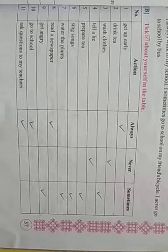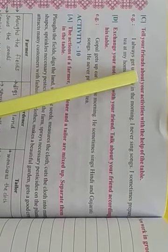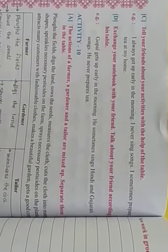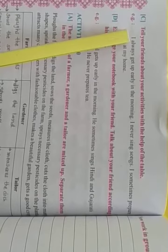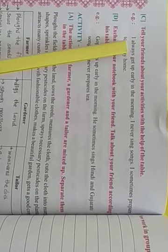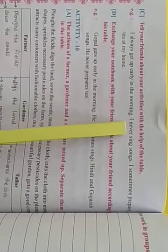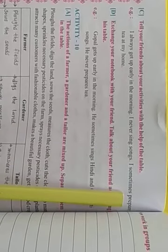Activity nine, and tell your friends about your activities with the help of the table. You can make a sentence. For example: I always get up early in the morning. Use seven sentences. I never sing songs. I sometimes prepare tea at my home.